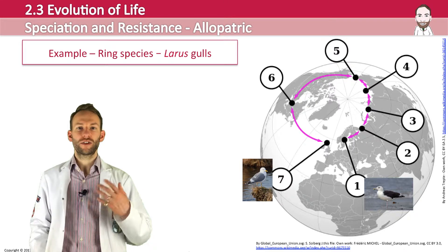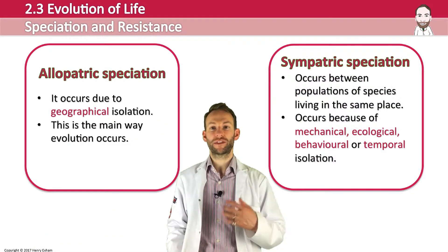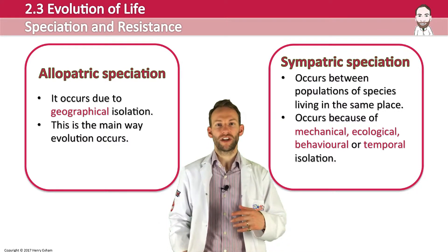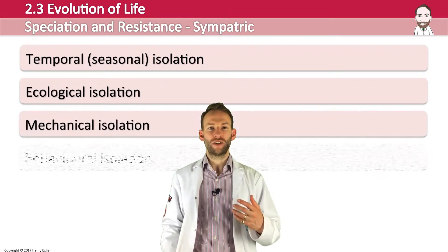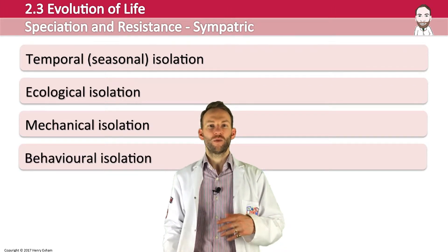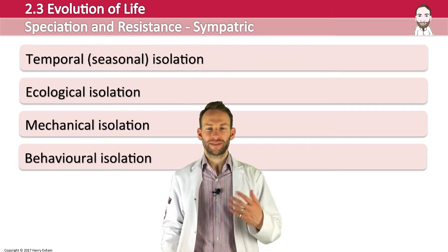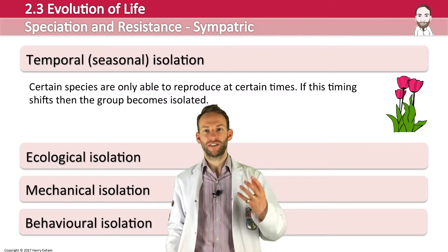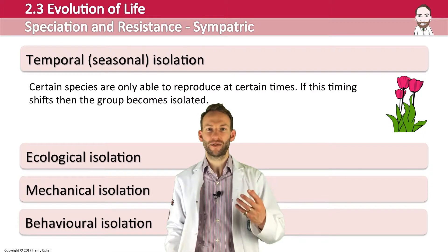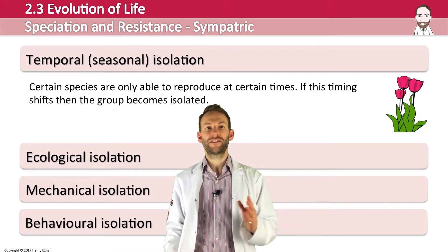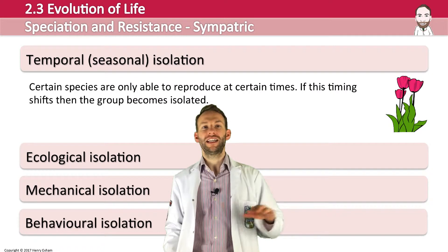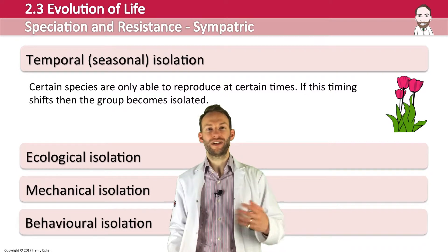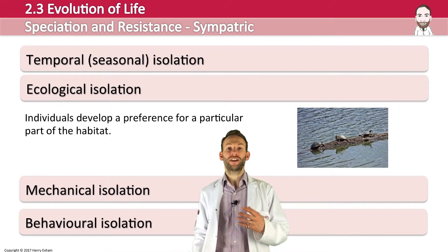Sympatric speciation occurs between populations of species living in the same place, caused by four different isolating mechanisms: temporal, ecological, mechanical, or behavioral. Temporal isolation is basically seasonal isolation — certain species are only able to reproduce at certain times. For example, certain flowering plants flower at particular times of year. If this timing shifts, they could become isolated even though not geographically separated, flowering at different times and therefore no longer able to interbreed.